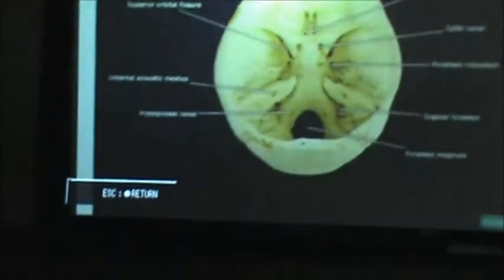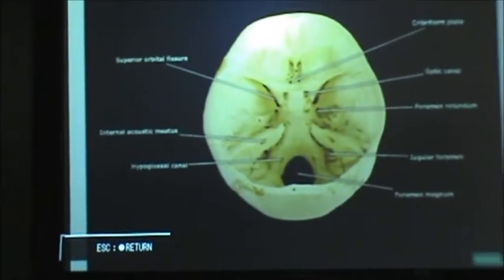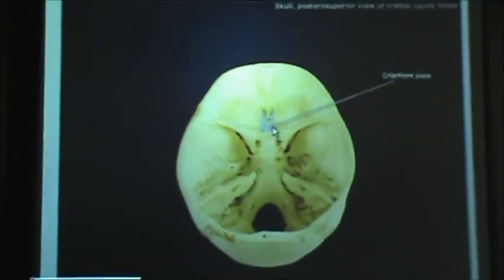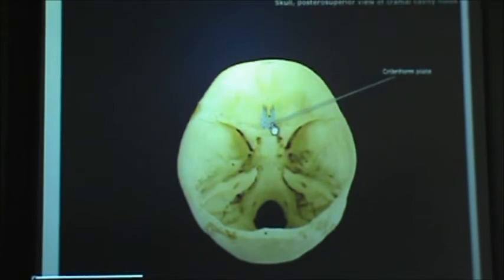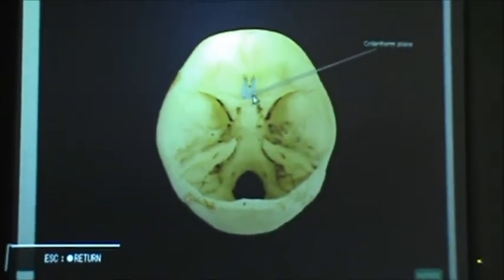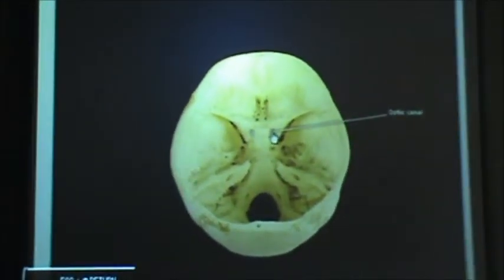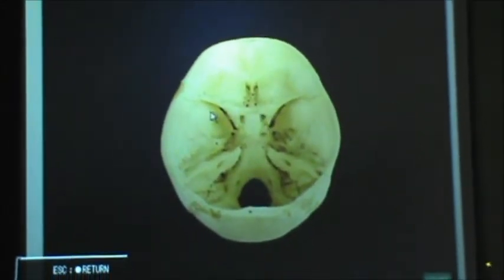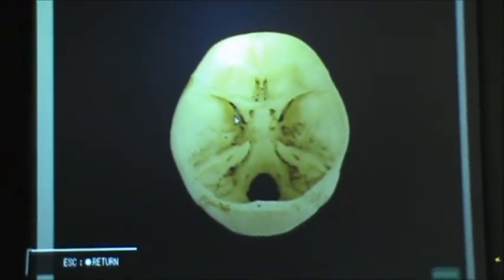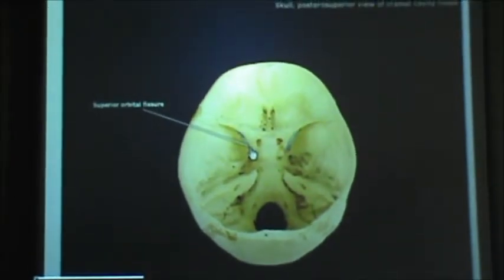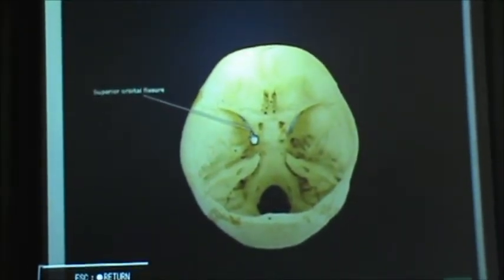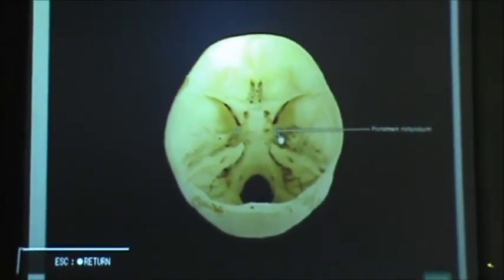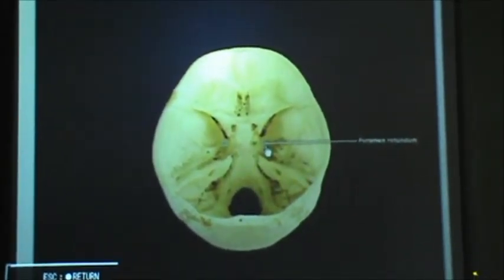This is a posterior view of the cranial cavity holes. We're going to start with the cribriform plate. Next we have the optic canal. Here we have a superior orbital fissure. And this is foramen rotundum — you can identify it because it's a round hole.